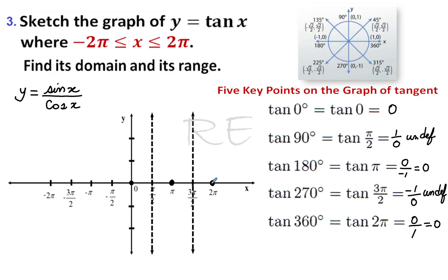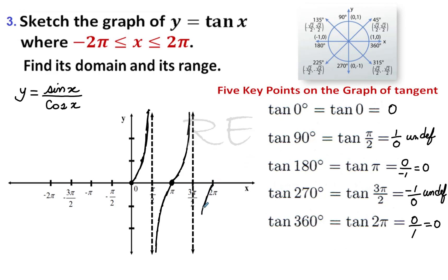Now we know that tangent pi over four is equal to one. Therefore, this is how the curve looks from zero to pi over two. Tangent three pi over four is negative one — that's how the curve looks from zero to pi. And tangent five pi over four is equal to positive one, so this is our curve between pi over two and three pi over two.